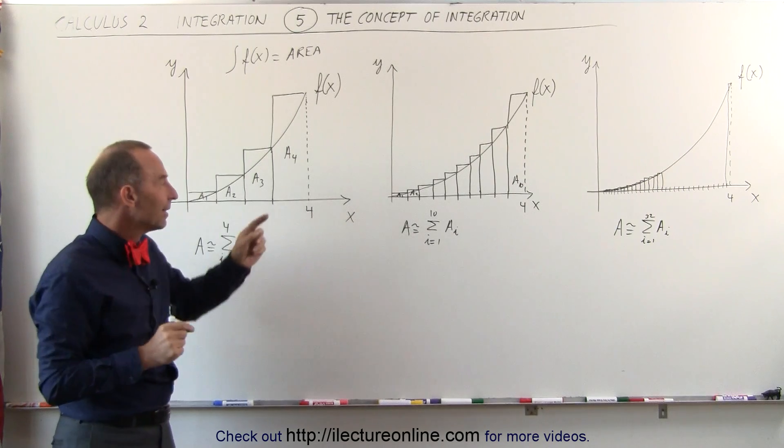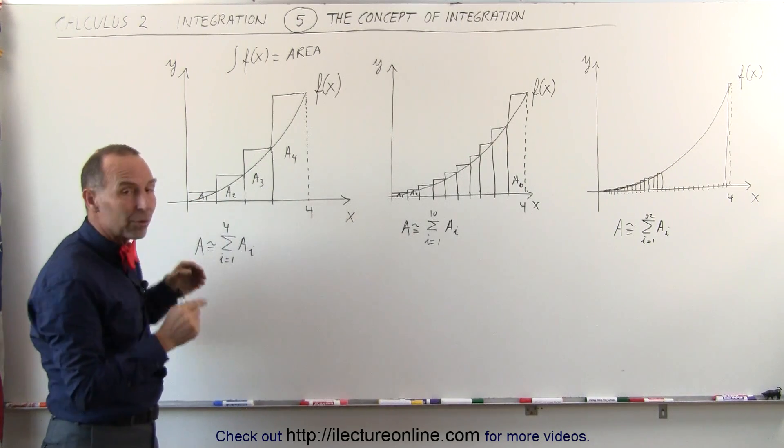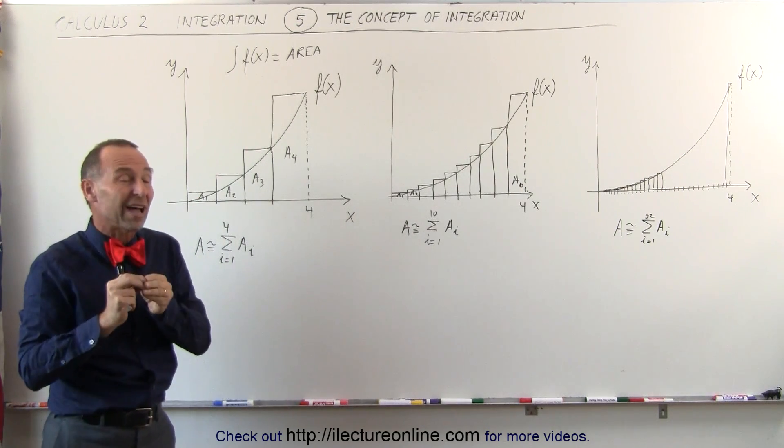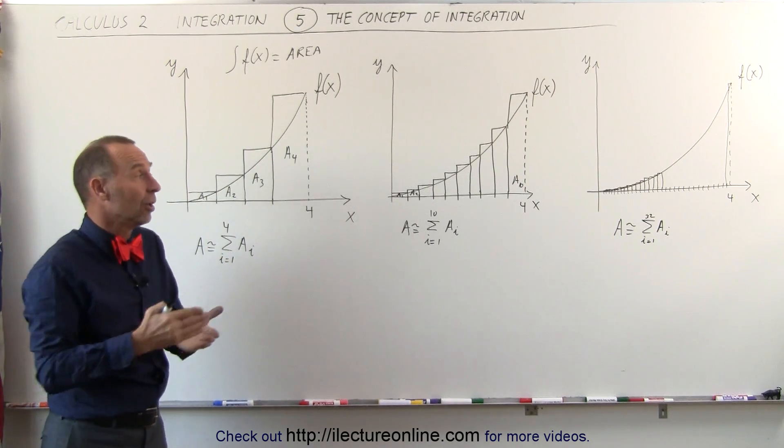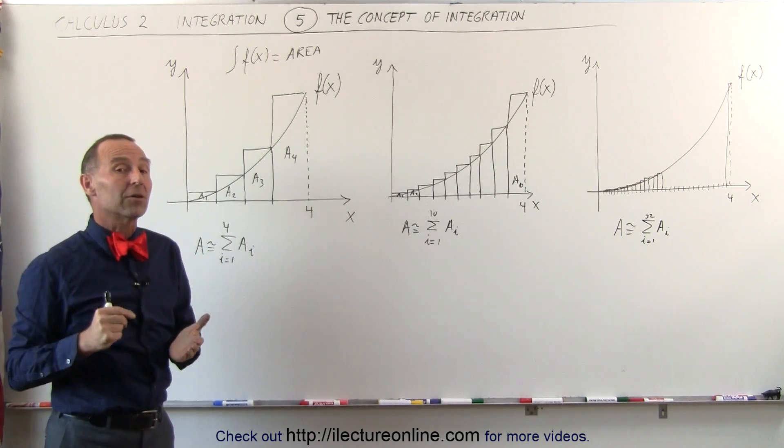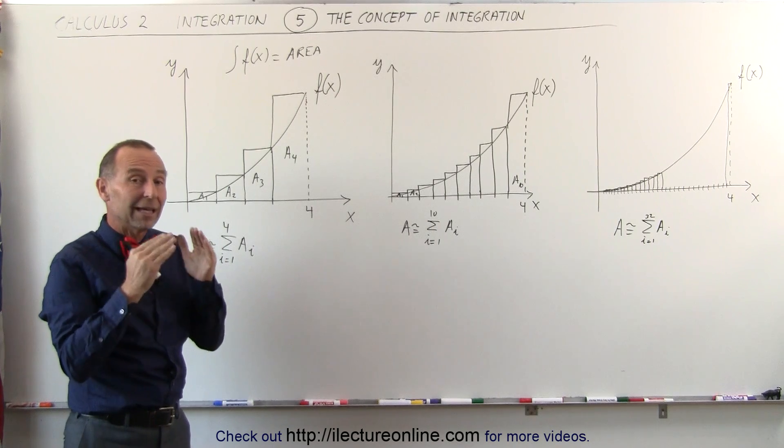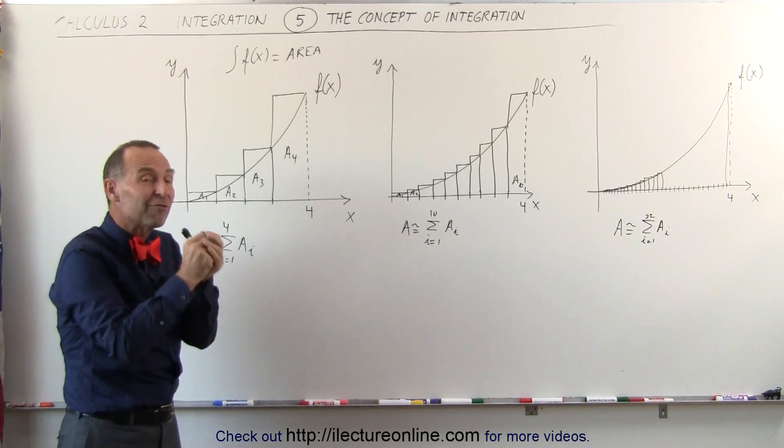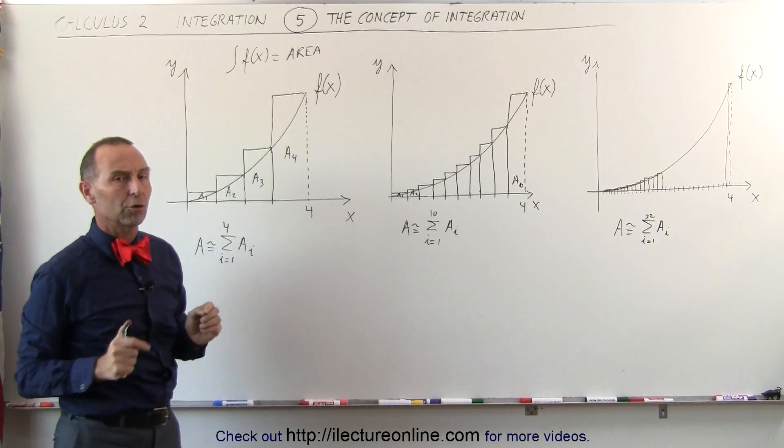They're all so thin that the excess area, that little corner that would stick out, is so minuscule in size that at that time, for all intents and purposes, if I add up a million of those rectangles, the area included in those rectangles would be very closely equal to the area underneath the curve.